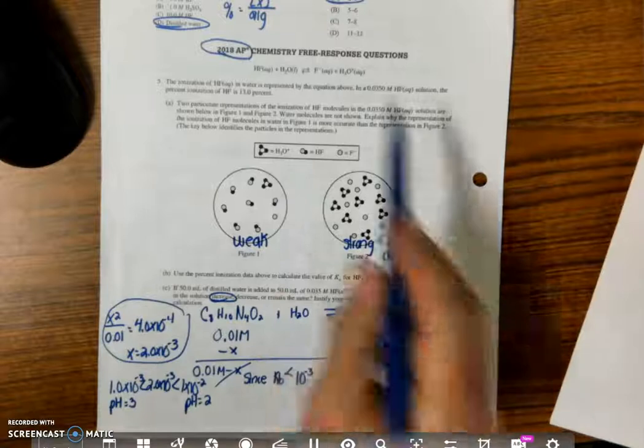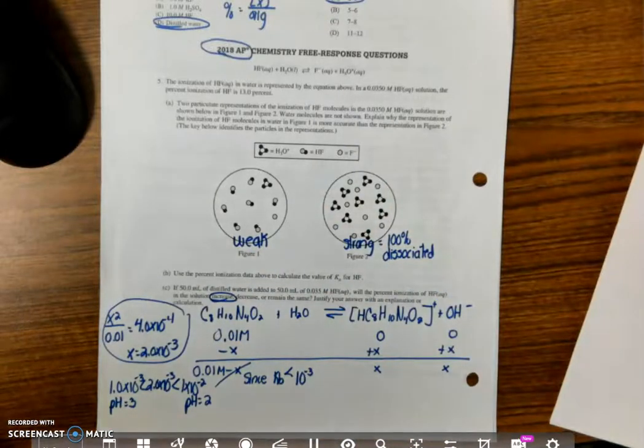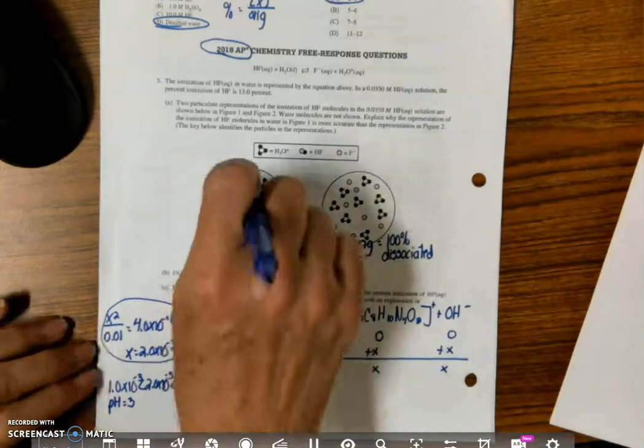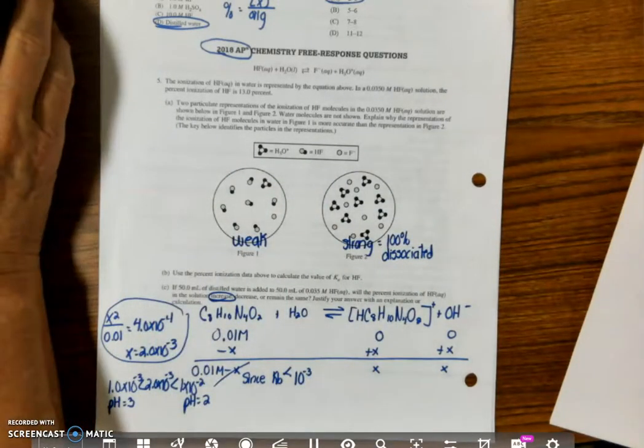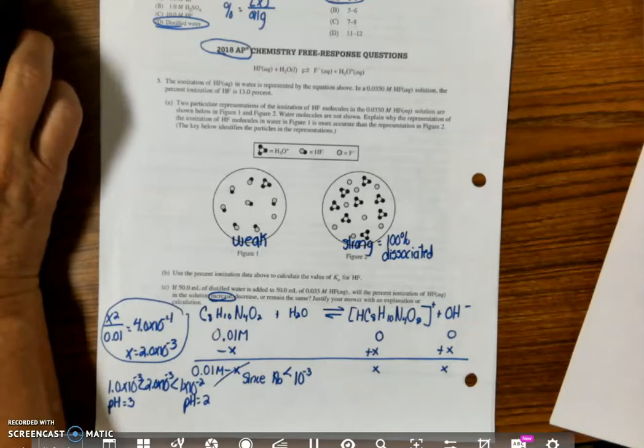I'll let you look this up. All you have to do for this one is look up the 2018 Chemistry Free Response Scoring Guidelines, and you'll get the rubric for this, and you can check on that and how to do that.